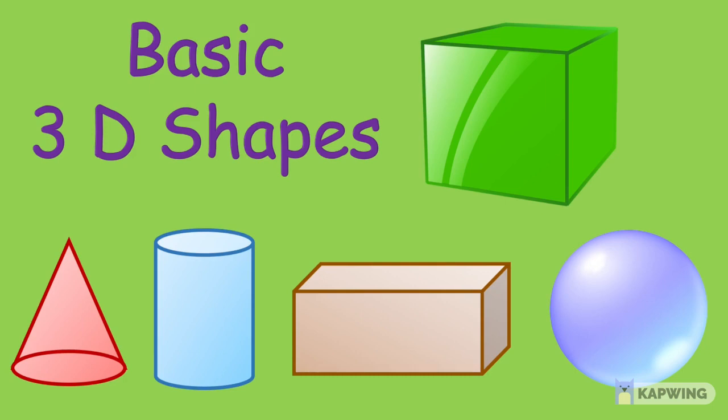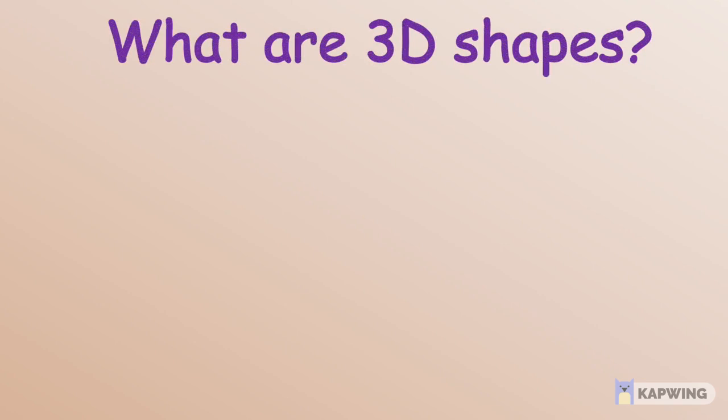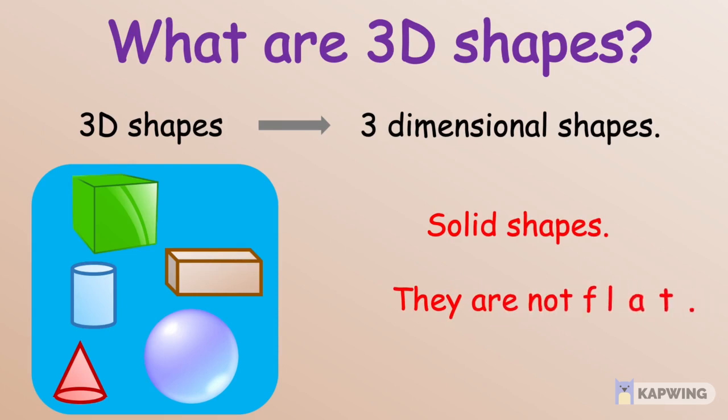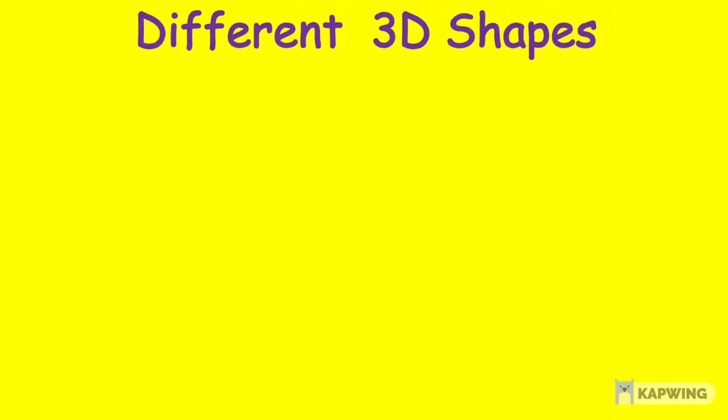Hi kids! In this video, let's learn about 3D shapes. So kids, what are 3D shapes? 3D shapes are three-dimensional shapes. They are solid shapes. They are not flat like the 2D shapes. But they are blown up shapes. They have thickness. There are different 3D shapes. Let's learn some of them.